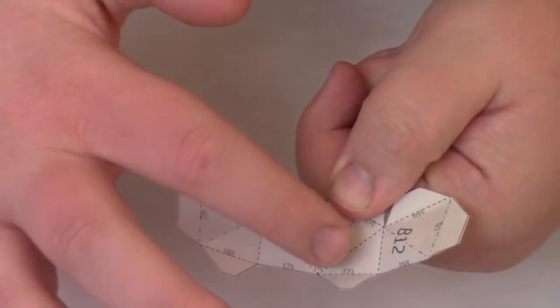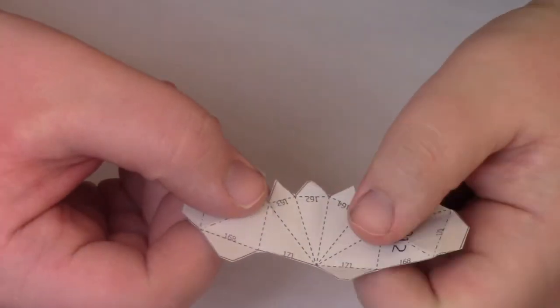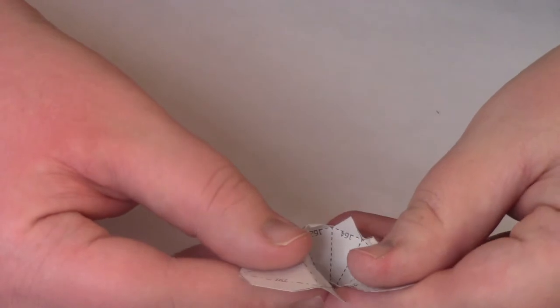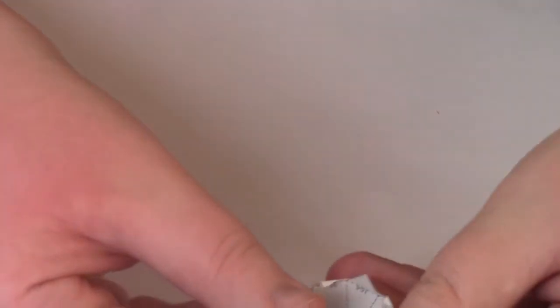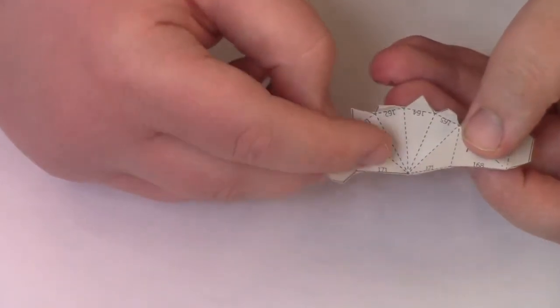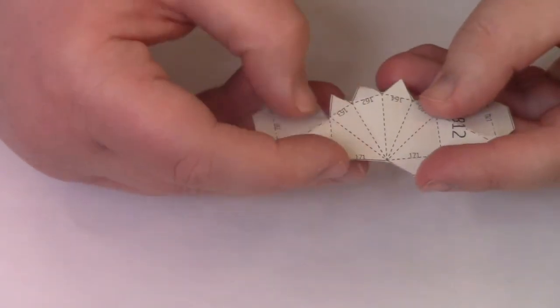To glue the pieces together, ensure that you only glue folds that match up to the number. For example, you want to make sure that the fold on one piece that says 163 is only glued to the side of the other piece that has 163.